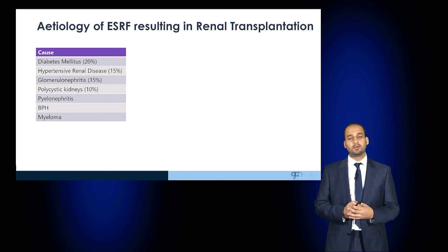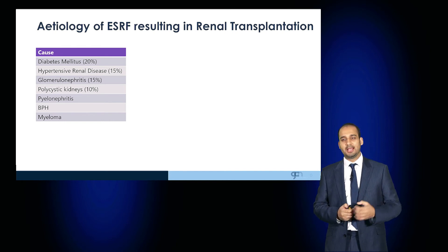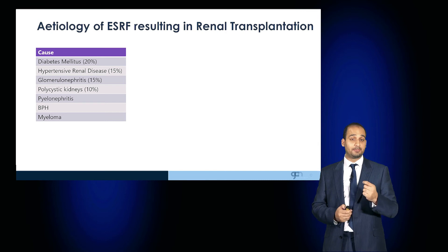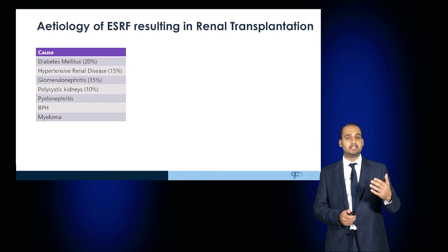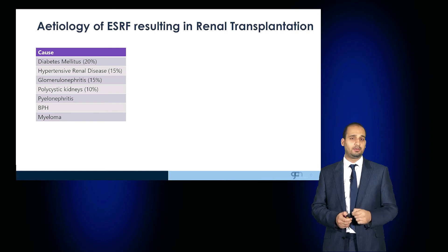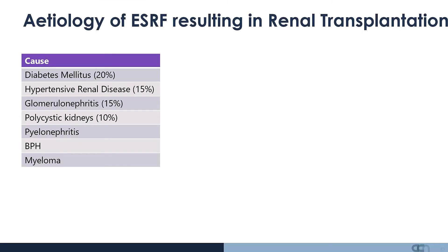What causes end-stage renal failure? Diabetes and hypertension are common causes. The glomerulonephritides and polycystic kidney disease are other important causes. Chronic pyelonephritis, benign prostatic hypertrophy leading to chronic bladder outflow obstruction, and myeloma are other causes of renal failure.